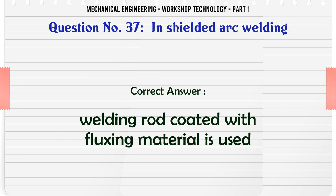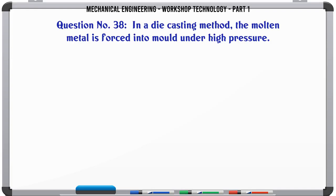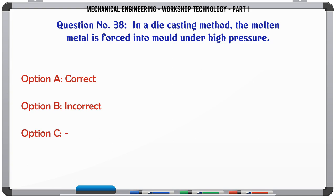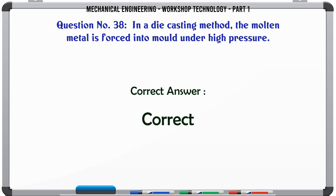In a die casting method, the molten metal is forced into the mold under high pressure. A. Correct. B. Incorrect. The correct answer is: Correct.